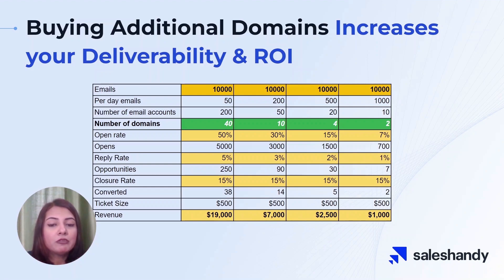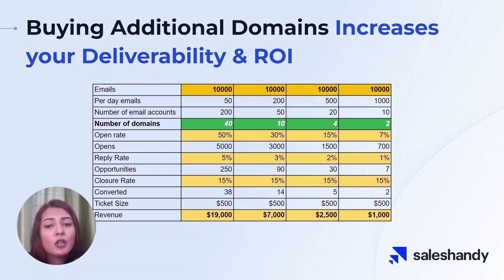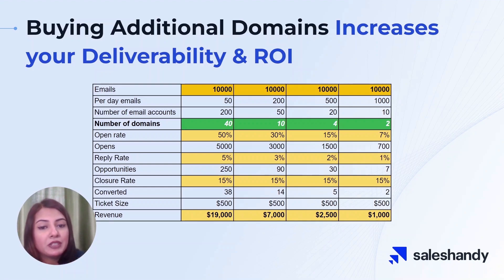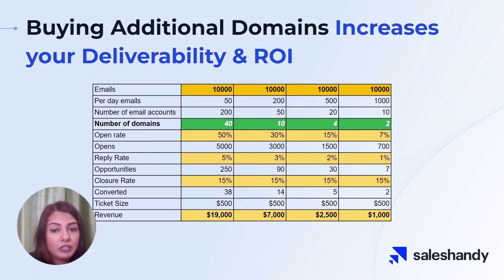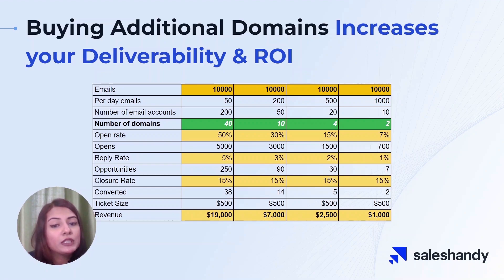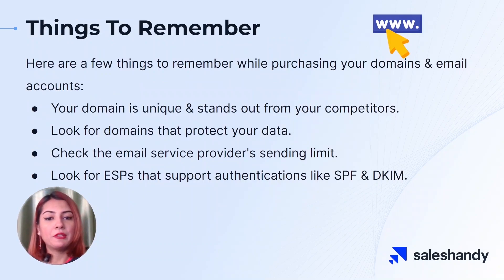From the table provided on screen, we can clearly see that if we try to send the same number of emails — 10,000 in our case — with more emails per day and fewer domains, the deliverability standards, which are the open rates and reply rates, suffer a lot. See the difference between the revenue generated with 40 domains compared to only two domains — there is a huge difference.